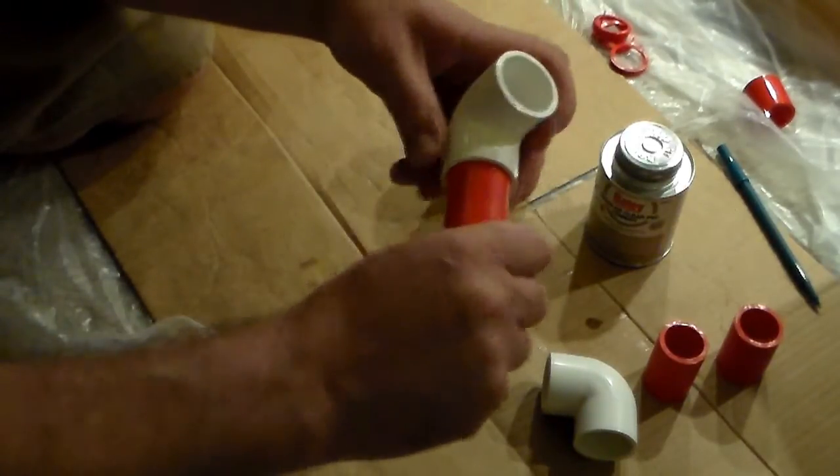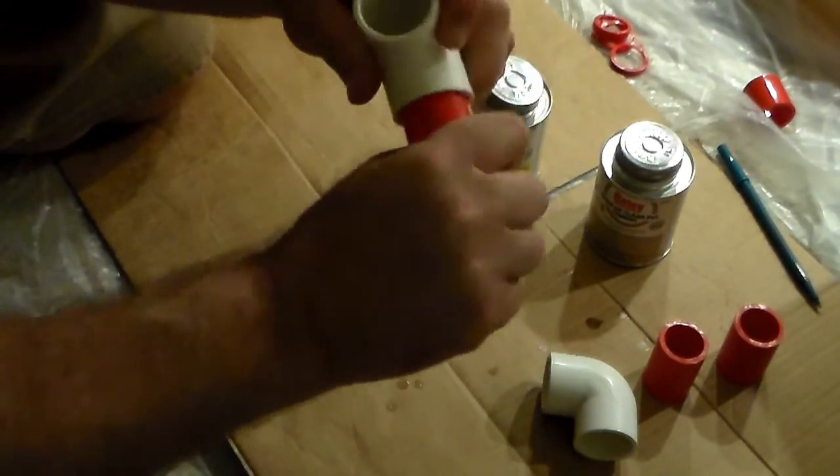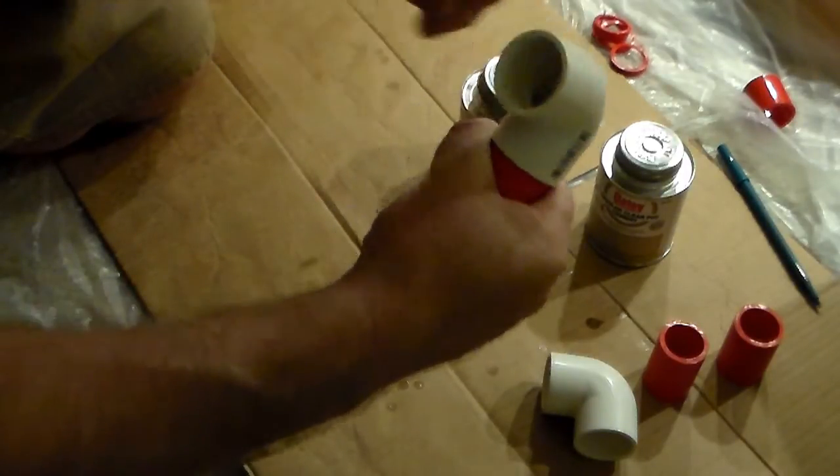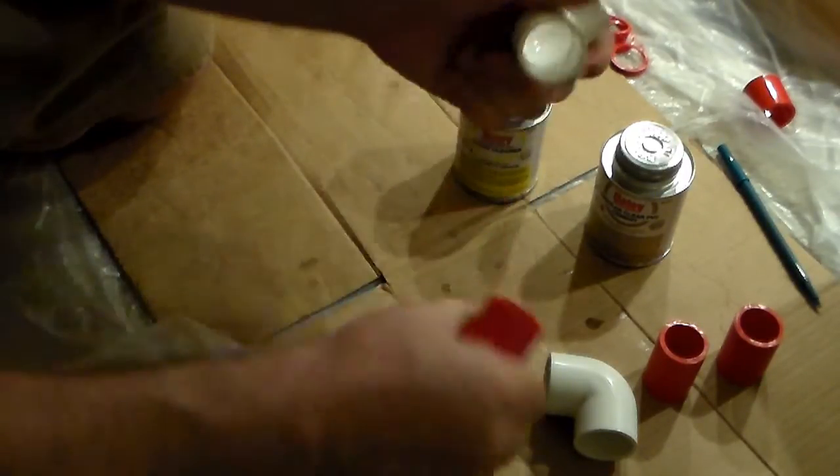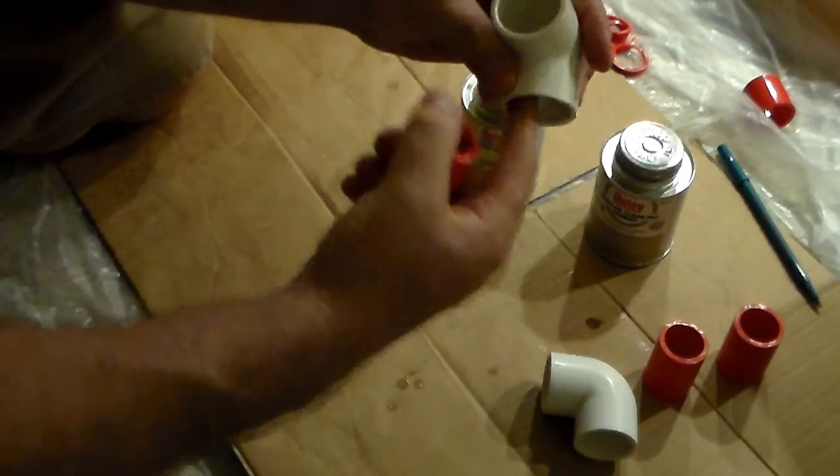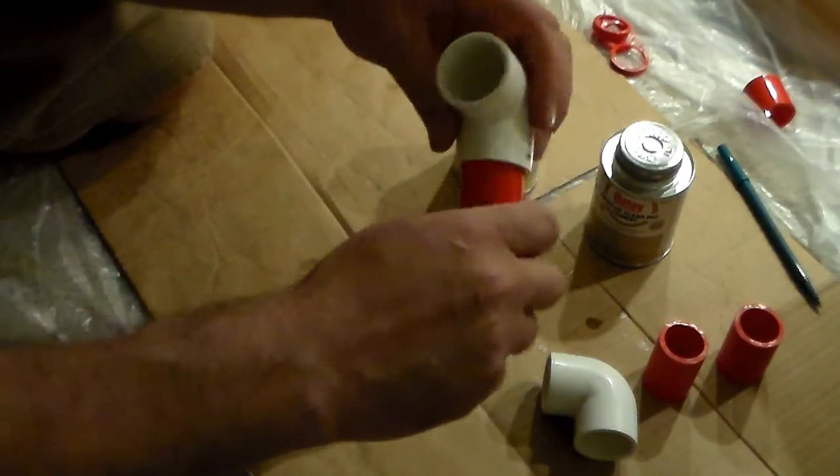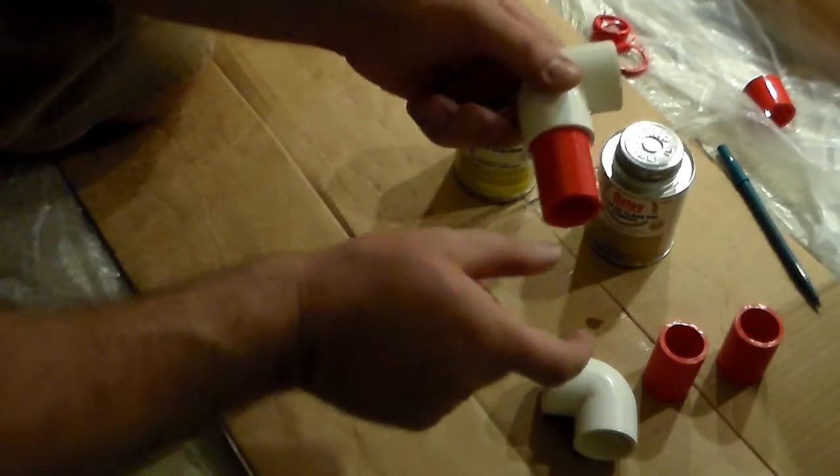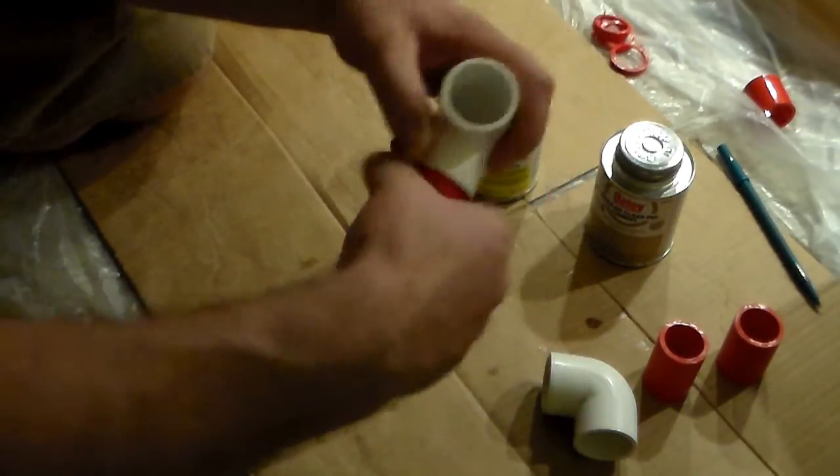Obviously you want to dry fit everything. Do your measurements, dry fit, stick it in there. You want to make sure it's all the way in when you're dry fitting it. Take a look in there. You want to figure one inch. The pipe's going in one inch. So take that into account. It'll be one inch on each side if you're going into a fitting.